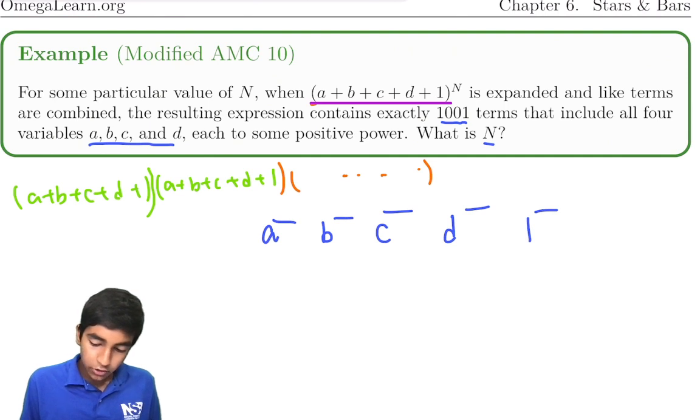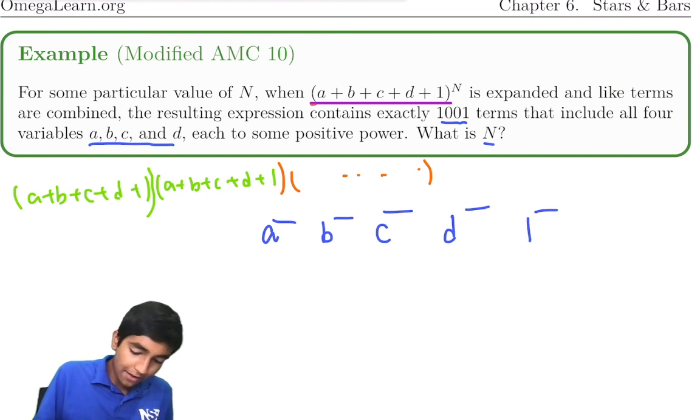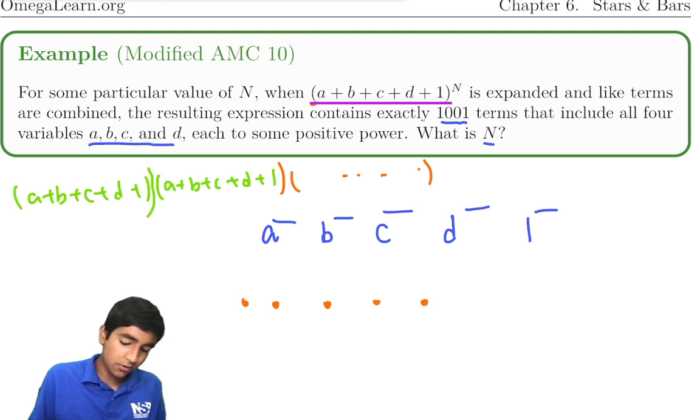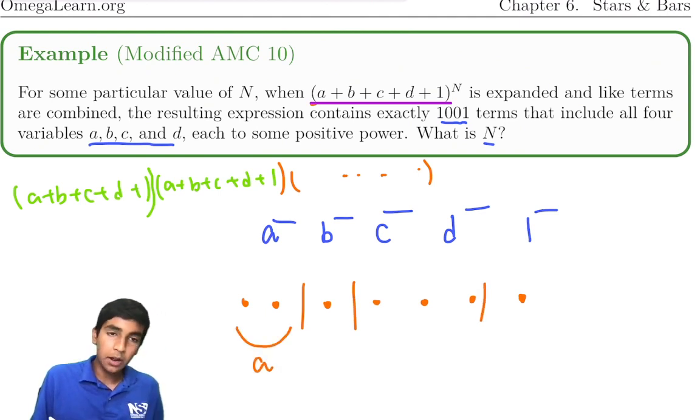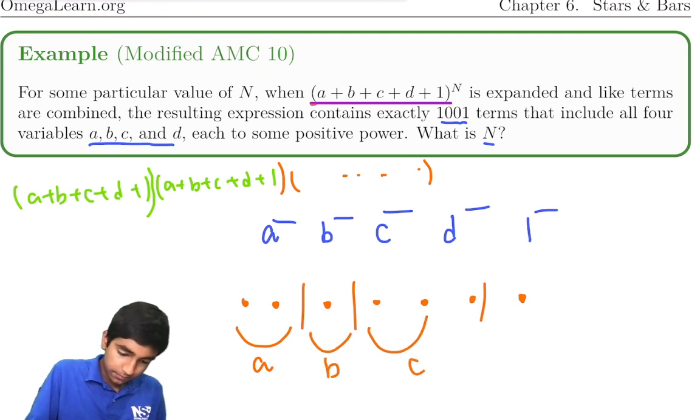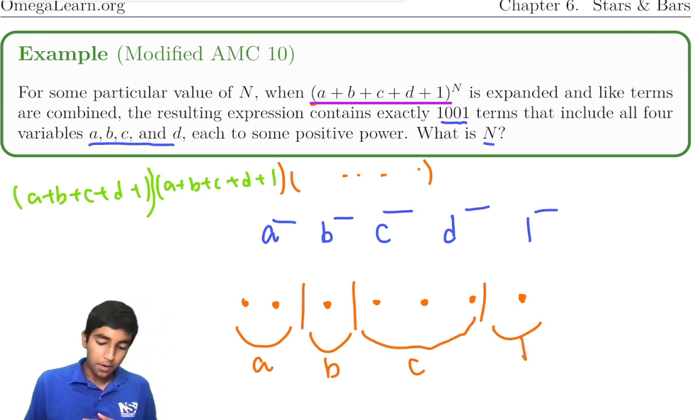So how do we distribute this? We have five things to distribute from. Let's say we have n balls and four dividers. Anything to the left here would be a's exponent. This would be b's exponent, c's exponent, and finally, d's exponent would be to the right of the third bar. It's the same thing because we're dividing it just like we would divide balls amongst bins.